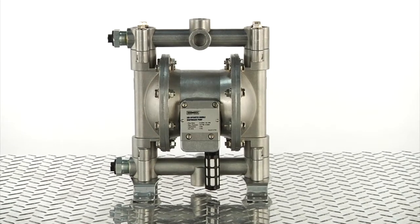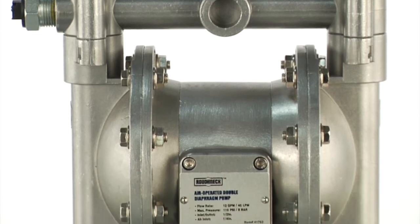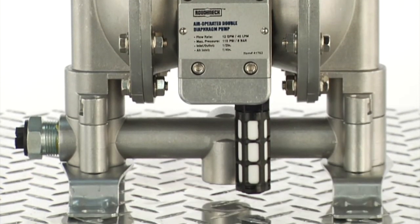This powerful air-operated double diaphragm pump from Roughneck pumps up to 12 gallons per minute at temperatures up to 122 degrees Fahrenheit.